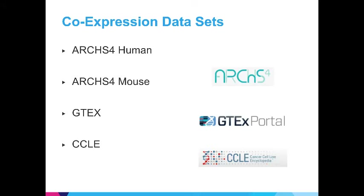I began with two types of data. The first type came from three different sources. The first is ARCHES4, a database made by Alex Lockman of the Mayan Lab. He processed over 130,000 samples of RNA-seq data from both human and mouse from the Gene Expression Omnibus, a publicly available resource. The other two co-expression datasets came from the GTEx portal, a database of RNA-seq data from tissue donors, and the Cancer Cell Line Encyclopedia. From these three sources, I received co-expression datasets or matrices of RNA-seq data.